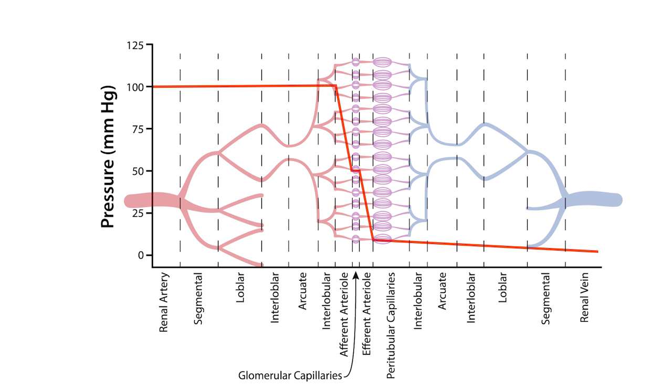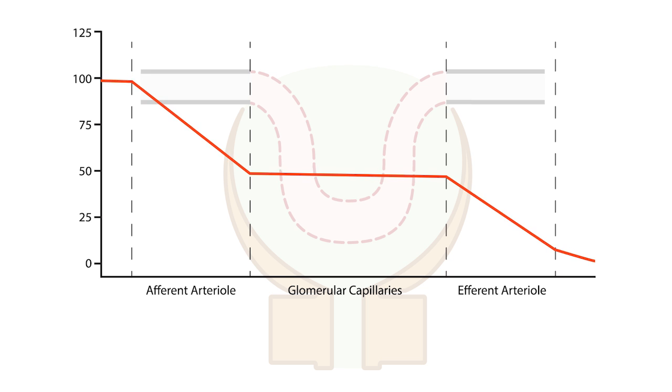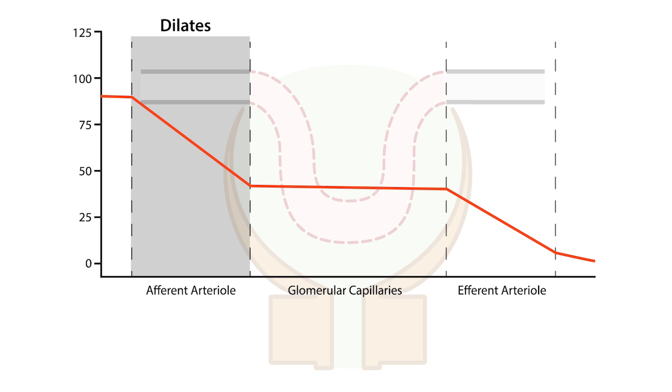and near 50 millimeters of mercury. For example, as systemic blood pressure decreases, the afferent arteriole responds by decreasing vascular resistance, which restores capillary perfusion pressure to near normal.